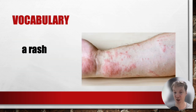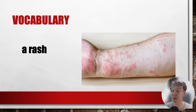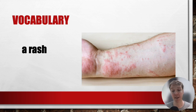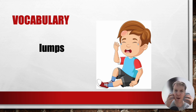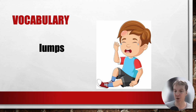A rash is a symptom. It's usually red marks on your skin. It can be caused by many things, like allergies or chicken pox or poison ivy. Sometimes they are itchy. Lumps: a lump is a bump. Henry's chocolate fever leaves lumps all over his skin. That's why he has to go to the doctor.